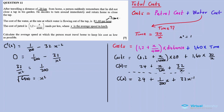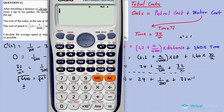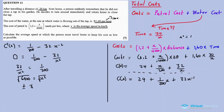Taking the square root: x = ±√6400 = ±80 kilometers per hour. Since x represents average speed, x must be positive, so x = 80 km/h.